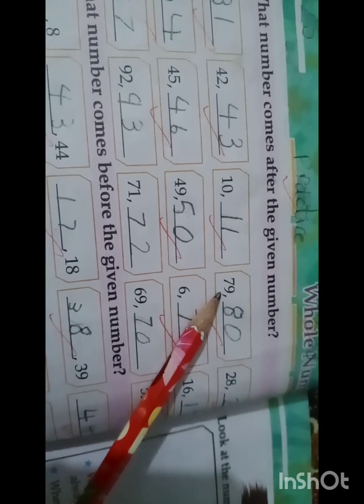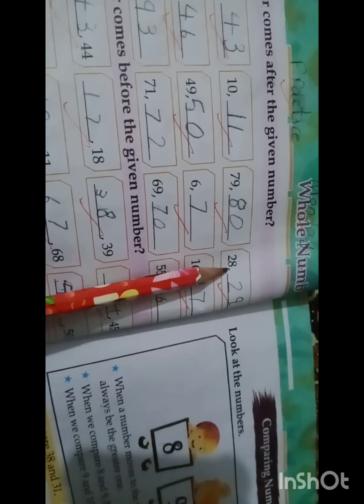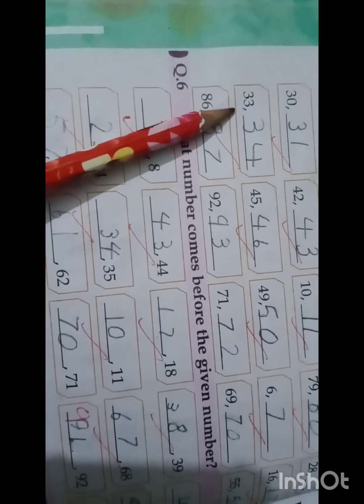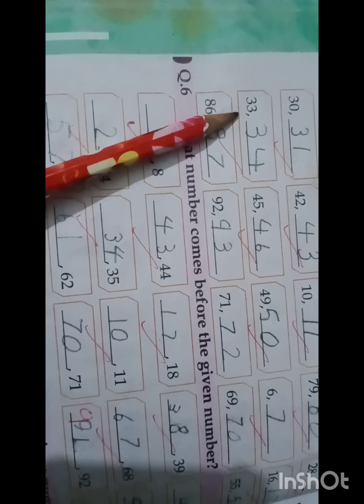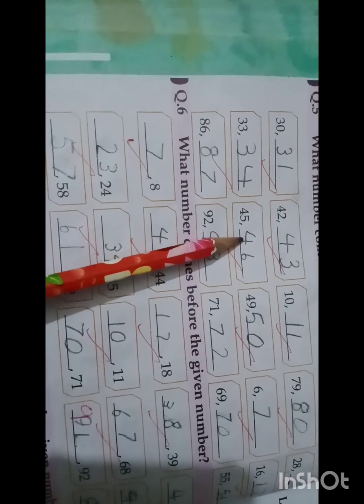What comes after number 79? Yes, number 80. The next number is 28. After 28 comes 29. After 34 comes 35. After 45 comes number 46.